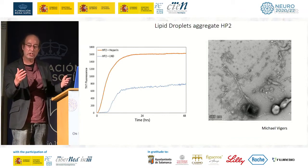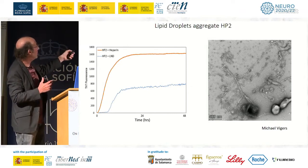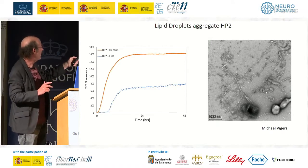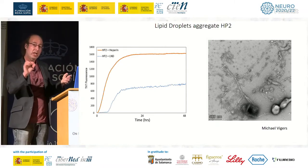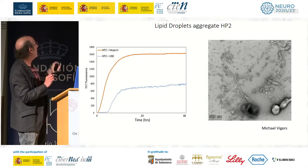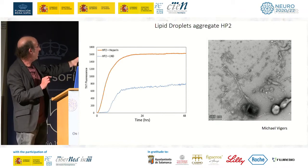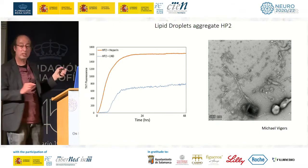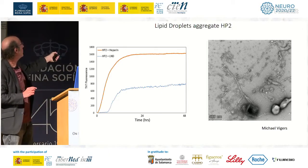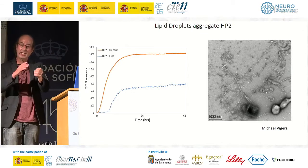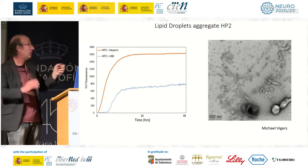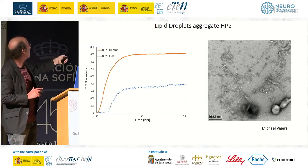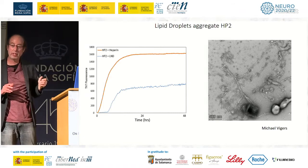Going back to the lipid droplet assay, we can show that lipid droplets not only aggregate full-length tau but can also aggregate HP2 (the one carrying the mutation) and HP1. We show that lipid droplets are forming filaments using a technique called thioflavin, which indicates a stacked beta-sheet structure. The thioflavin signal rises as expected with heparin, and even with lipid droplets we get a marked increase in the thioflavin signal.